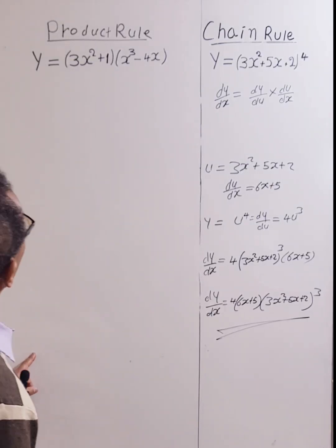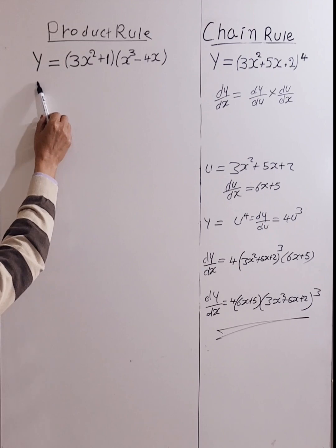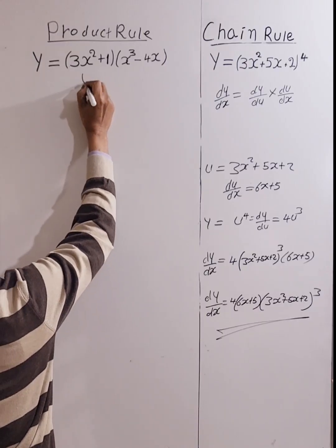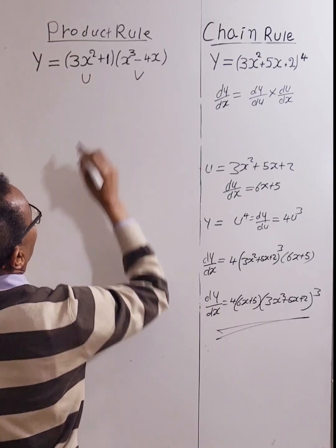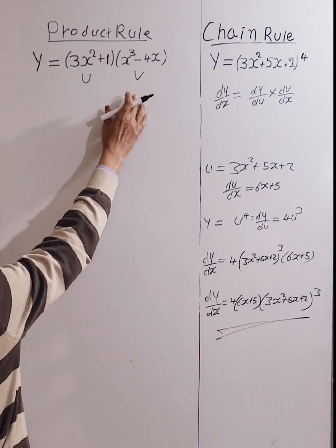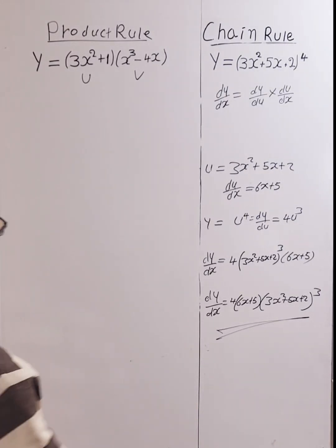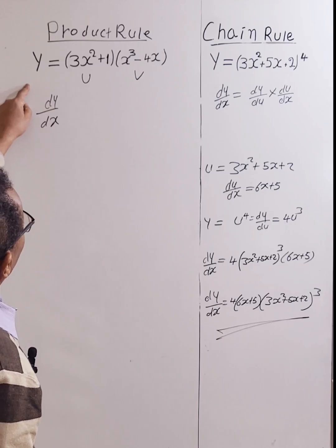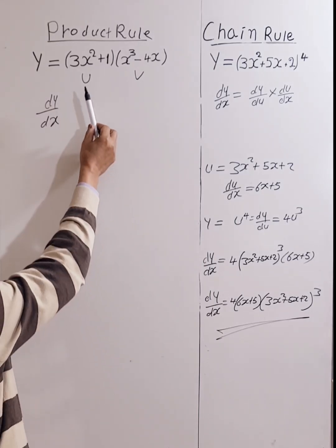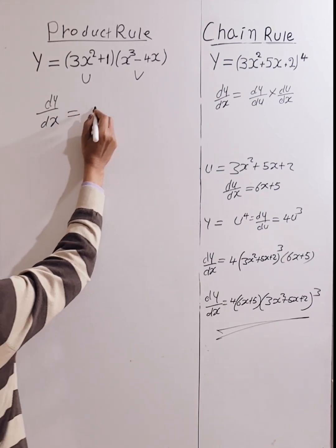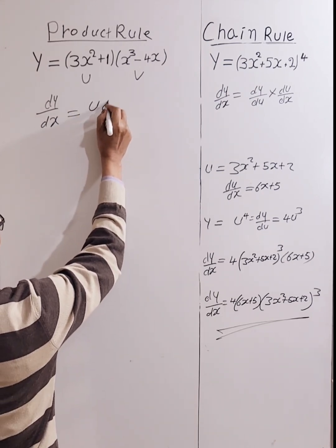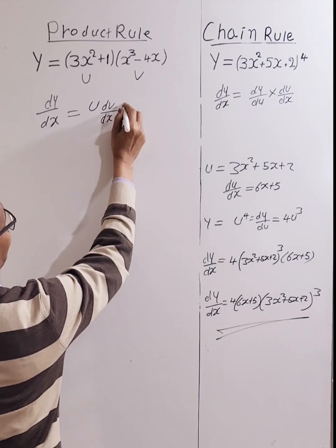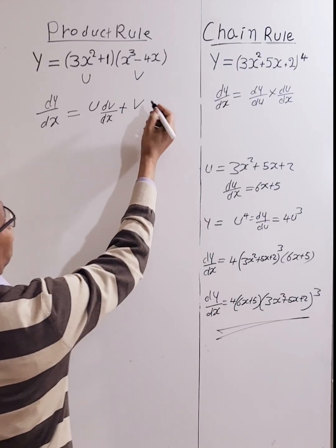Finally, let's go to the left side: the product rule. As you can see, y is equal to a product of two functions. Let's call them u and v, where u and v are functions of x. Then dy/dx, if y is a product of two functions u and v, equals u times the derivative of v plus v times the derivative of u.